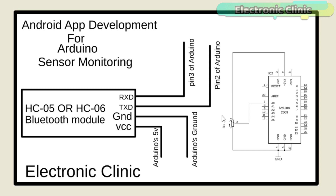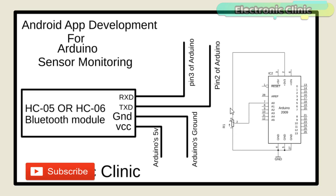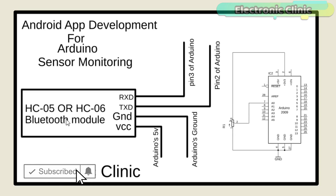For demonstration purposes I'm using a variable resistor, which can easily be replaced with any sensor you want. The middle leg of the variable resistor is connected with the Arduino analog pin A0, while the other two legs are connected with the Arduino 3.3V and GND. On the left side, we can see a Bluetooth module — you can use HC-05 or HC-06.